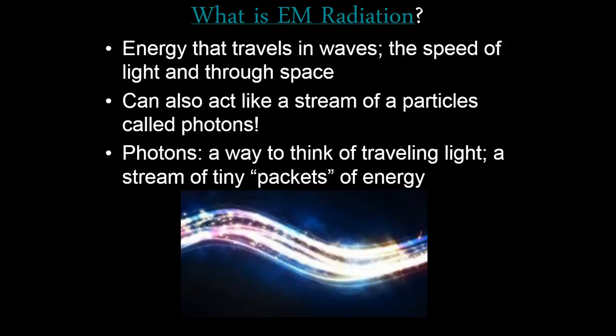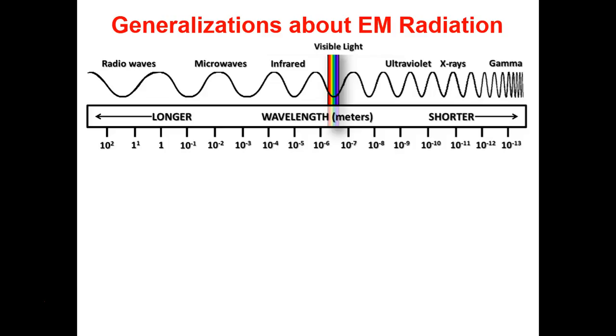A photon is like the basic unit of light — an individual piece of light. You can think of it as a little packet of energy or electromagnetic radiation. When you think of radiation, you might think of really scary things, but a lot of these types of radiation are actually very mild and not things that would hurt us. There is wave-like behavior because it travels in waves, but there's also particle-like behavior.